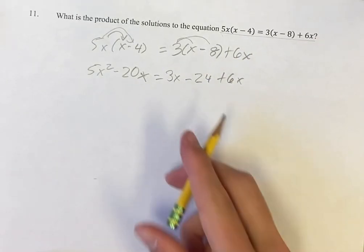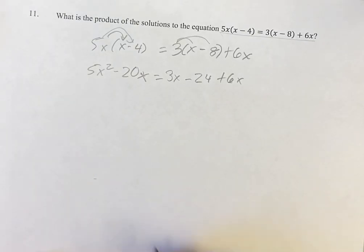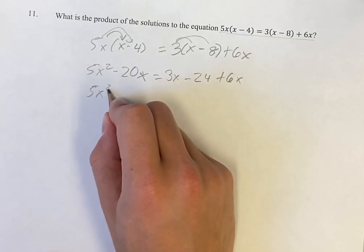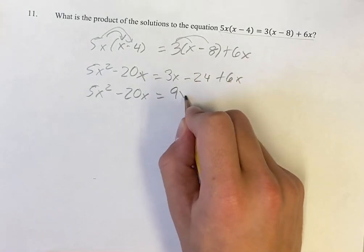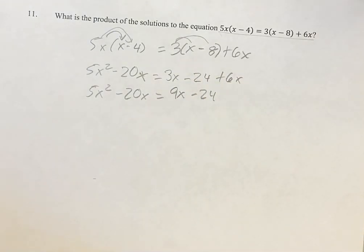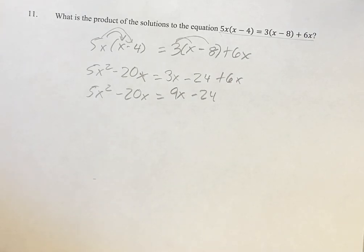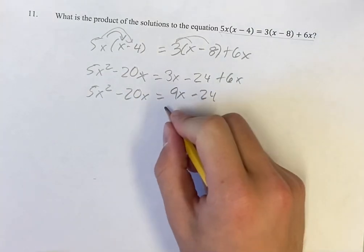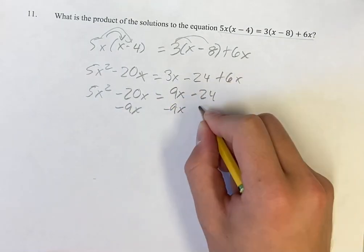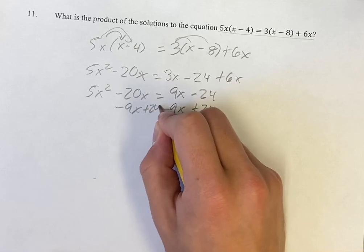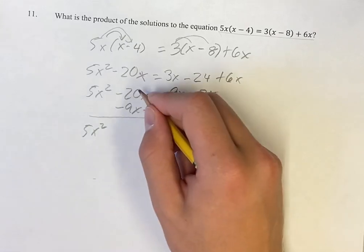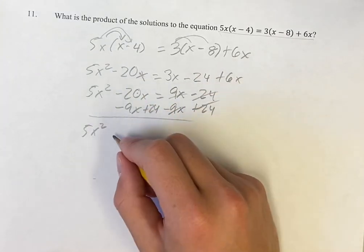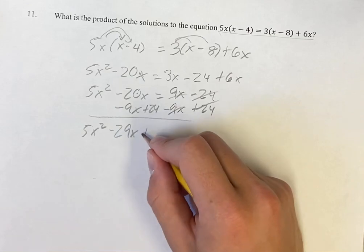Now we have a quadratic, so we want to get everything over to one side and set it equal to 0. We can simplify the right side: 3x plus 6x is 9x minus 24. Subtracting 9x from both sides and adding 24 to both sides gives us 5x squared, minus 20x minus 9x is minus 29x, plus 24.